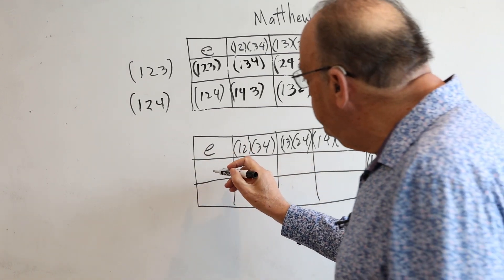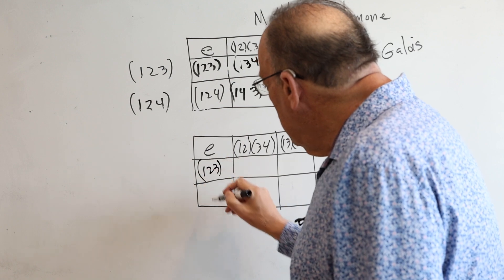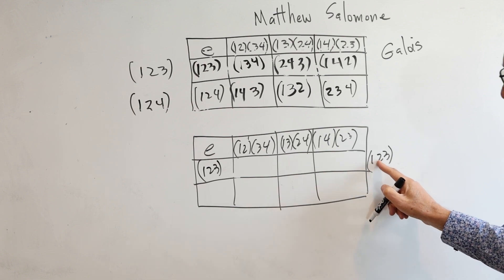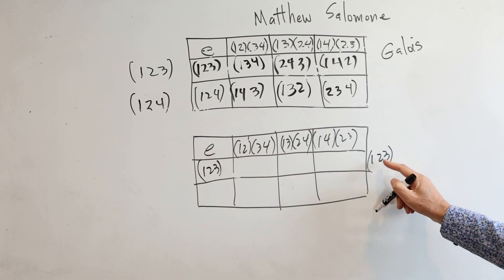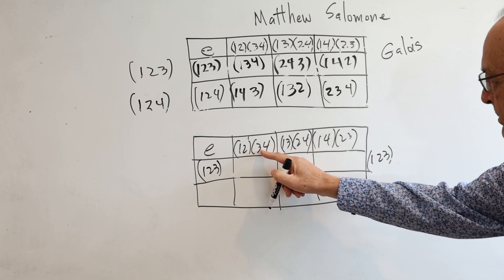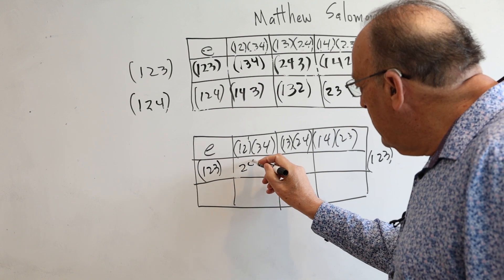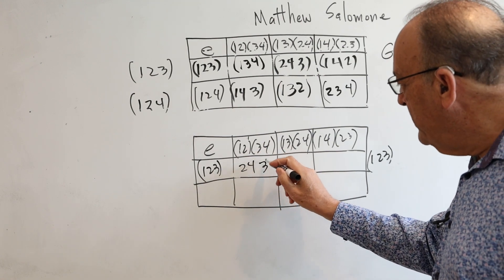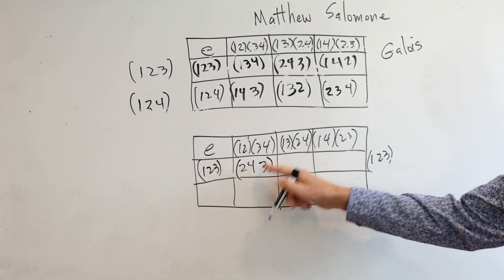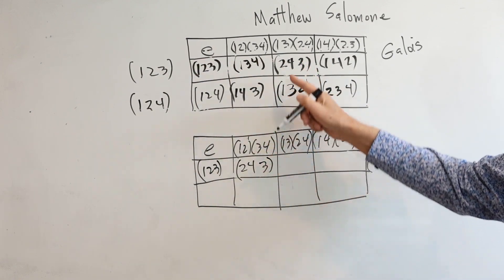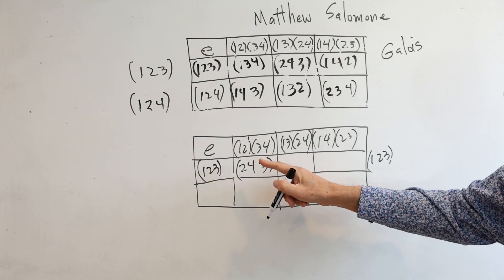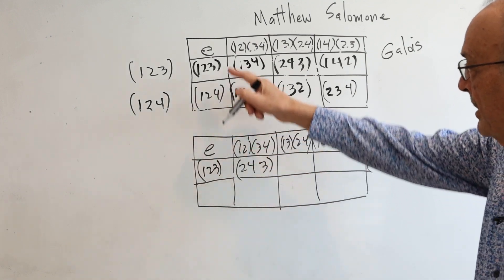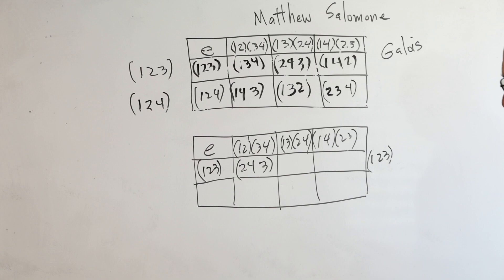We'll multiply this times this, and of course we get this back. Now we'll multiply this times this — starting on the right. One goes to two and two goes to one, so one goes to itself. Two goes to three and three goes to four, so two goes to four. And four goes to itself and four goes to three, so four goes to three. We look and see if this element is in the second row up here — and it is. It hasn't been ruled out that this is a normal subgroup.